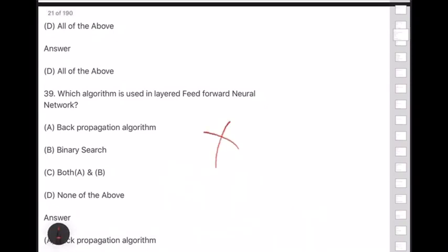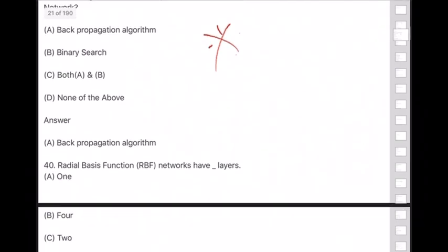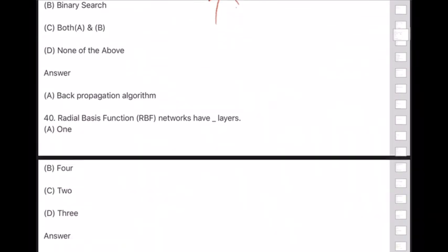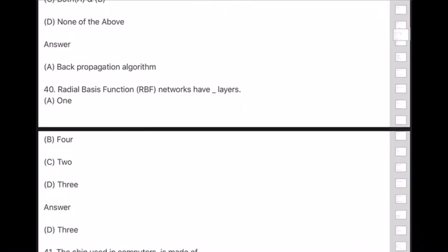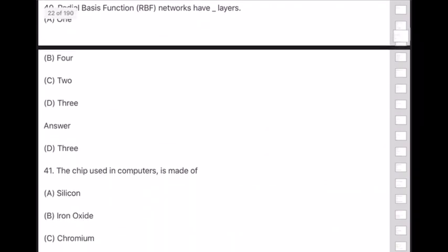Please make a special note — the algorithm used in layered feed forward neural networks is the back propagation algorithm. Question 40: RBF (Radial Basis Function) networks have how many layers? Answer is option D — three layers.